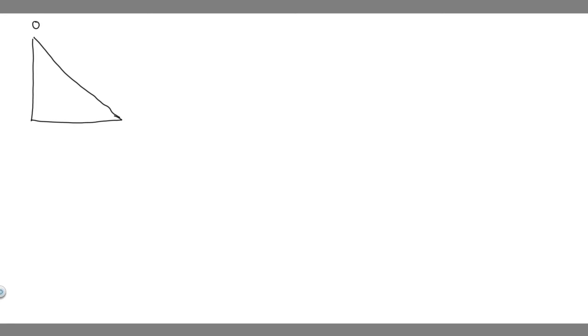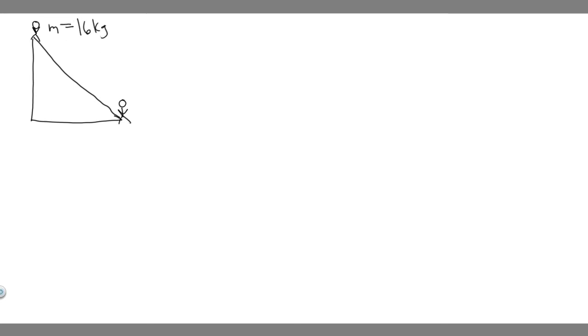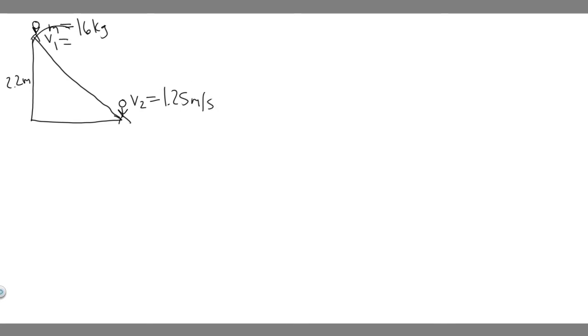Before we solve this problem, let's draw what's going on. This is going to be the slide that the child's going down. The child at the beginning has a mass of 16 kg, and this is the child at the end after sliding down. The slide is 2.2 meters high. Their speed at the bottom, V sub 2, is 1.25 meters per second. V sub 1 is their initial velocity, and we're assuming they start from rest, so it's 0 meters per second.